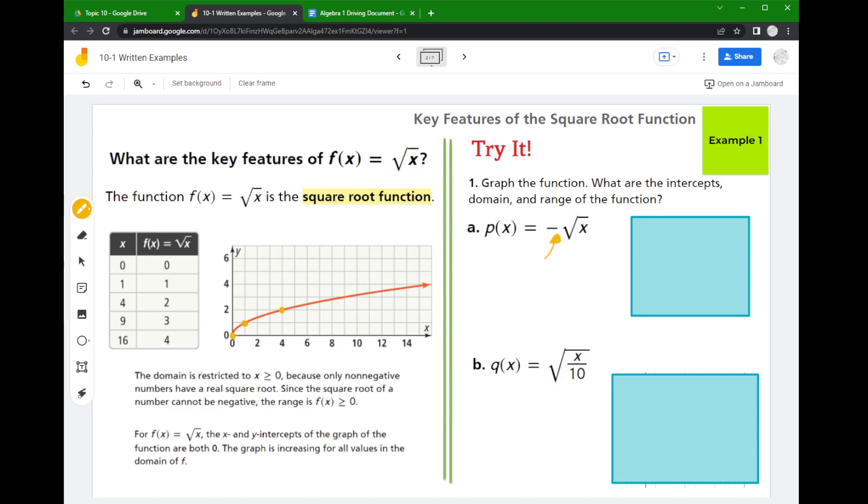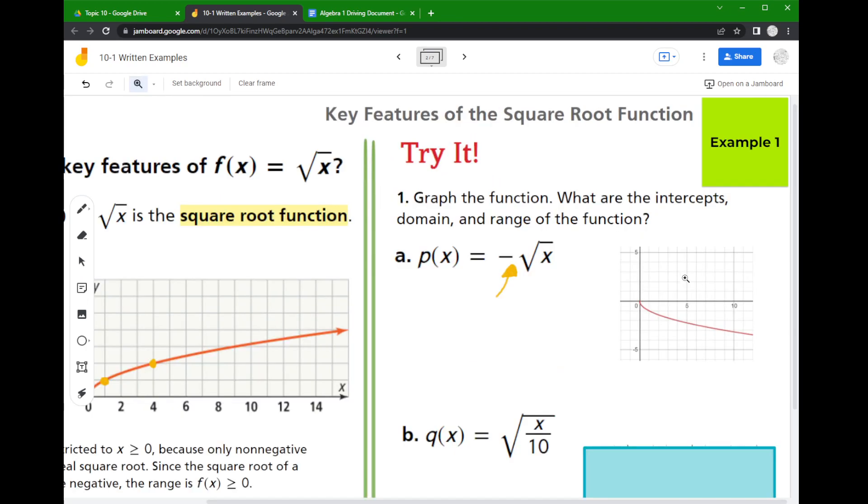That negative a value, if you remember your transformations, is going to cause a vertical reflection. That means that we flip the graph upside down. So here's the graph, I'm going to zoom in on it so we could just see a little better.